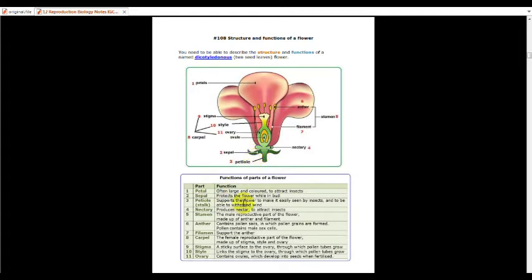The sepal, it is to protect the flower while it is in bud. So meaning that before the flower blooms, the sepal will protect the flower before it blooms. The pedicel or known as the stalk, it supports the flower to make it easily seen by insects and to be able to withstand the wind. The nectary produces nectar.